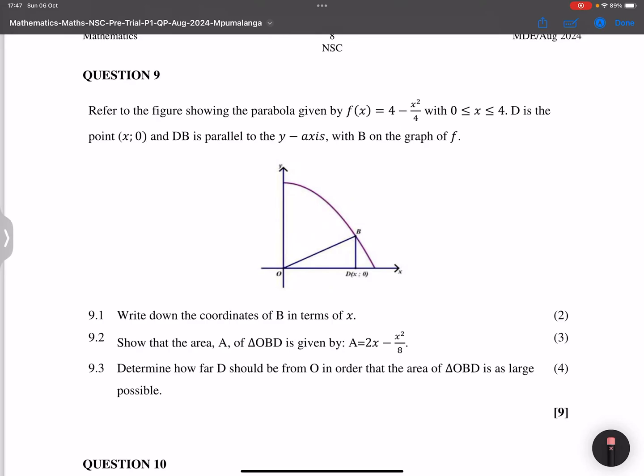All right, let's go into question number 9. They say refer to the figure showing the parabola given by f(x) = 4 - x²/4, between 0 to 4. They say D is the point (x, 0), and DB is parallel to the y-axis. So this is a vertical line over here with B on the graph of f.